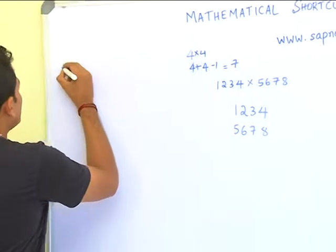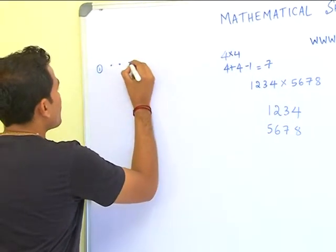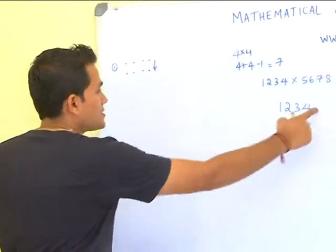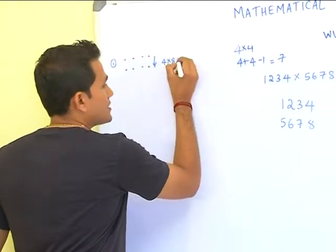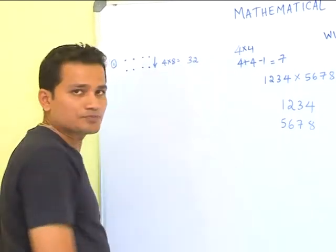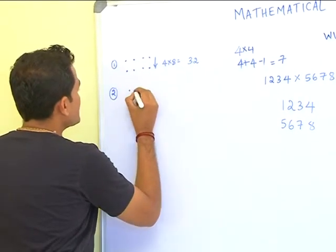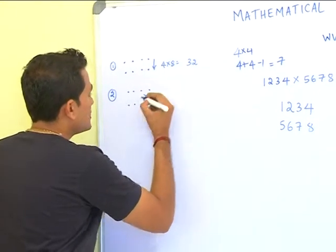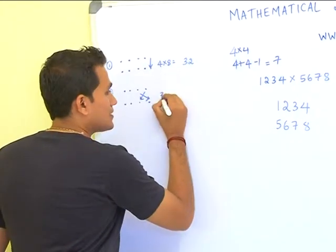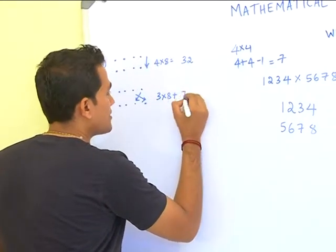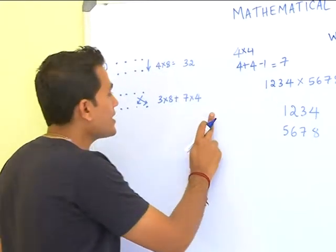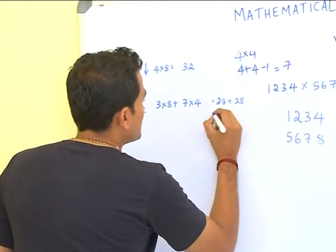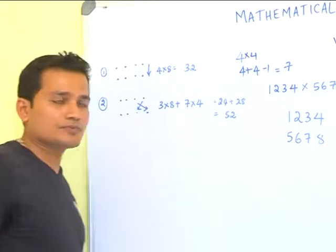The first step would be to multiply the last digits: four into eight is equal to 32. The second step would be to cross the last two digits. That is three into eight plus seven into four. So twenty-four plus twenty-eight is fifty-two.